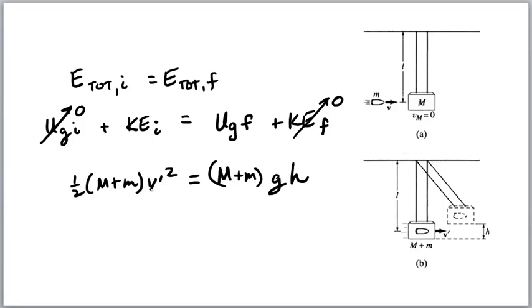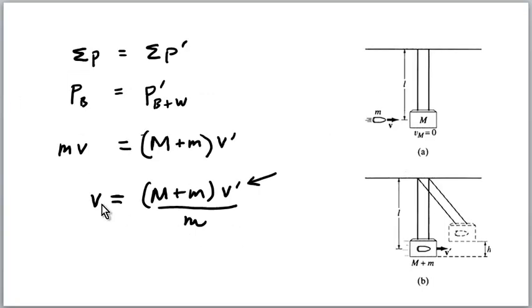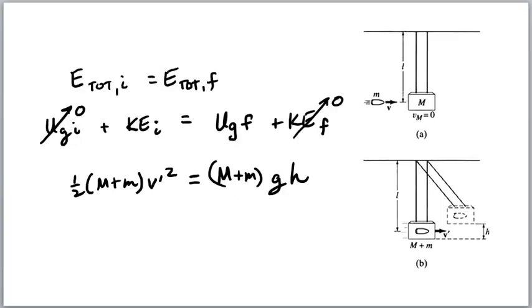which would be one-half M plus m V prime squared is equal to the potential energy, which is M plus m g h. Now, if we solve this for V prime, we can go back to our original equation, stick that in for V prime, and I do believe we will have a valid answer, as we will have M, m, g, and h, which are all allowed.